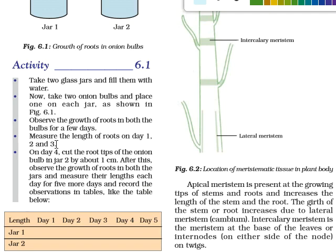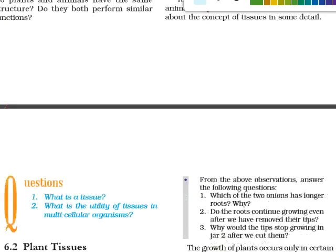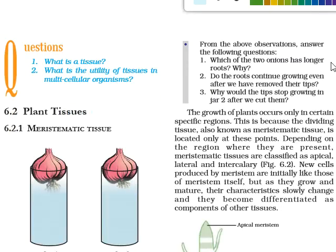After cutting, place the onion back in the glass jar and observe the growth of roots again. Record the growth for jar one and jar two on day five. We will then answer: which of the two onions has longer roots and why?